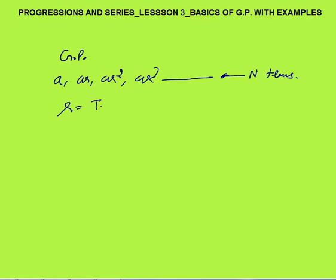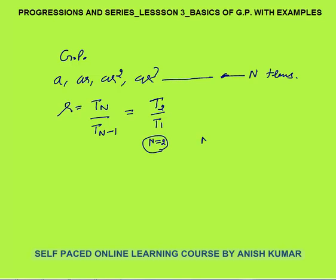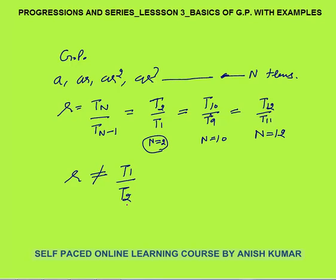The common ratio R is always defined as T_N upon T_(N−1). This is very important. T_N means the larger-indexed term and T_(N−1) means the lower-indexed term. It could be T2 by T1, or the 10th term by the 9th term, or the 12th term by the 11th term. Remember: the common ratio is not the 1st term divided by the 2nd term — it is always the 2nd by the 1st. Common ratio is always the later term divided by the earlier term.